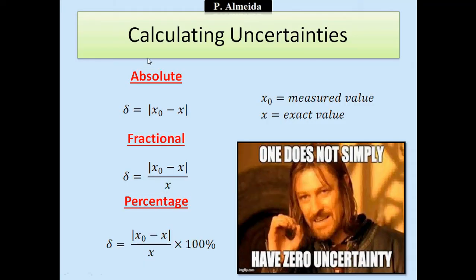So how do you calculate them? Here are the formulas. The absolute, I put this symbol delta, is going to be the module, the positive value of the difference between x0 the measured value, minus x the exact value. If you don't have the exact value, it can be the mean of all the measurements that you took.